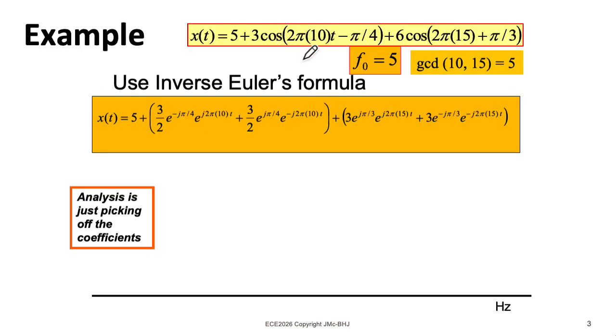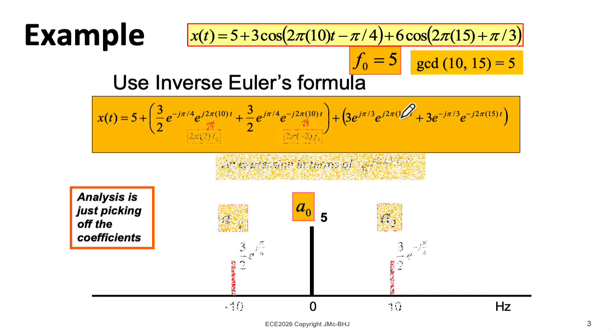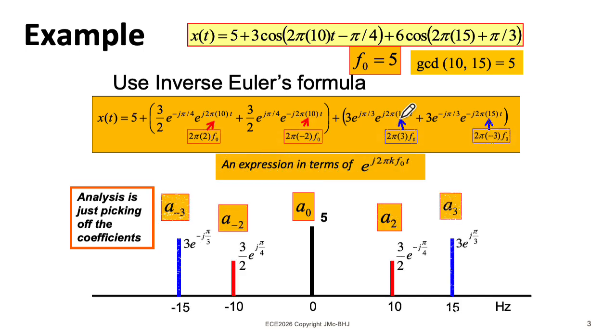In the last lecture, we looked at this example where we have a signal that's a constant plus a couple of cosines. The fundamental frequency of this signal is 5 hertz. And in the particular spectrum we're going to draw down here, the horizontal axis is a hertz axis. Sometimes people use omega, so you need to pay attention. Anyway, it's easy enough to take these cosines, rewrite them using Euler's formula, and then you can just read off the Fourier series coefficients. You don't really have to do that much work.